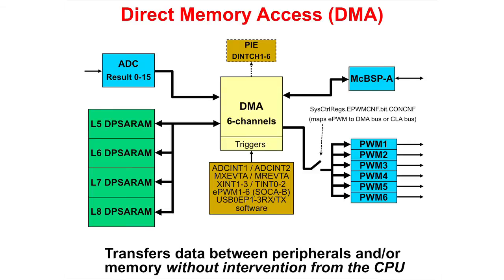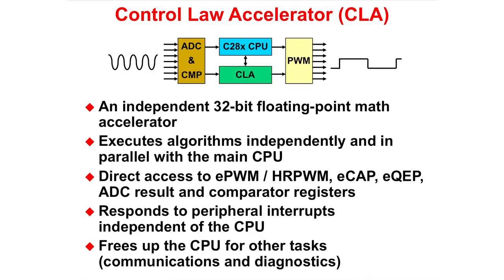The DMA allows data to be transferred between peripherals and/or memory without intervention from the CPU. The DMA can read data from the ADC result registers, transfer to or from memory blocks L5 through L8, transfer to or from the MCBSP, and also modify registers in the EPWM. Triggers are used to initiate the transfers and, when completed, the DMA can generate an interrupt.